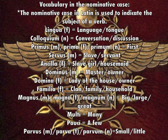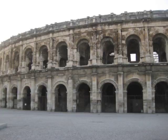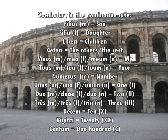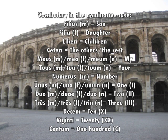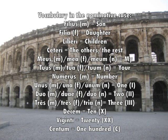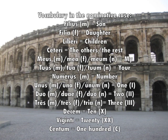Multi — many. Pauci — a few. Parvus, parva, parvum — small or little. Filius, filii — son. Filia — daughter. Liberi — children. Ceteri — the others, the rest. Meus, mea, meum — my. Tuus, tua, tuum — your. Numerus — number.